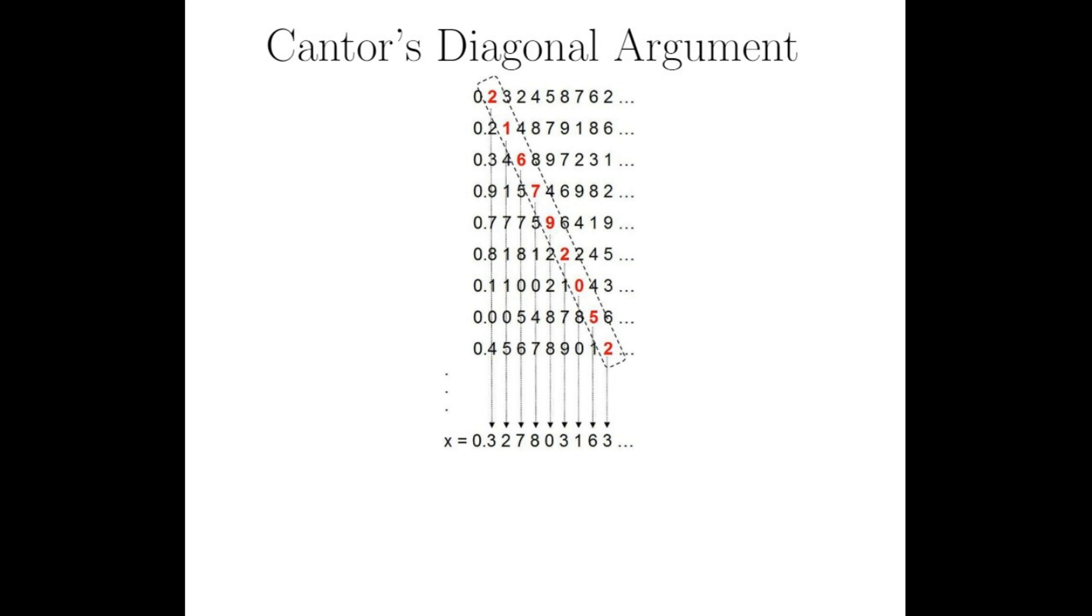This new number is different from every number on my list. This contradicts our assumption that the real numbers are listable. Therefore, there are literally more real numbers than rational numbers.